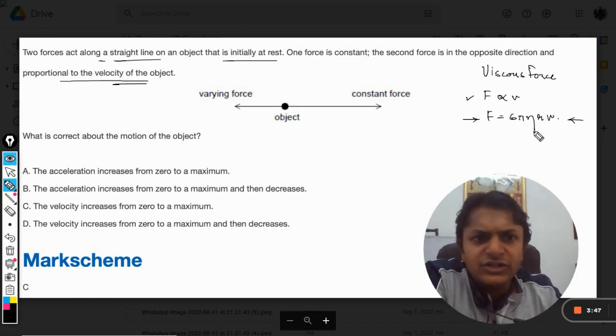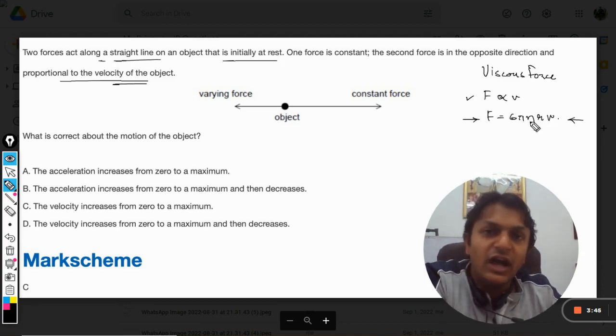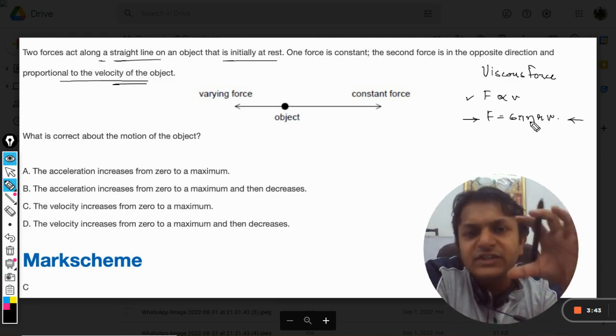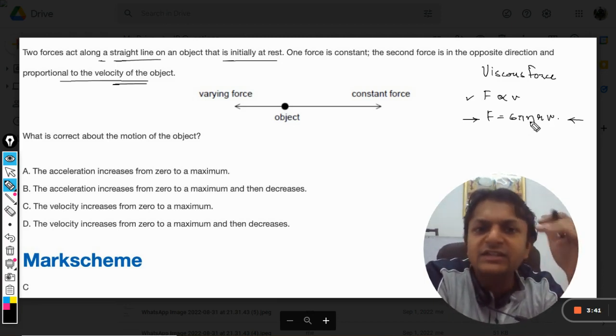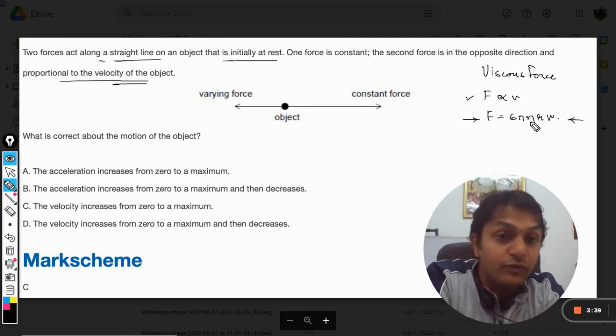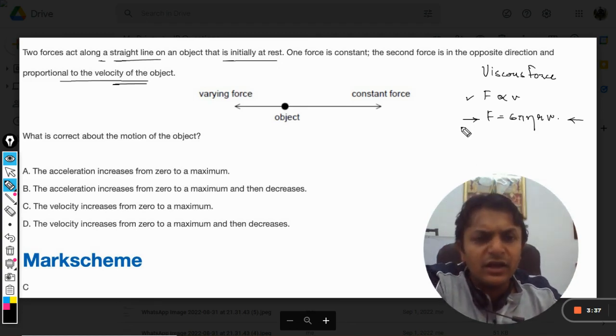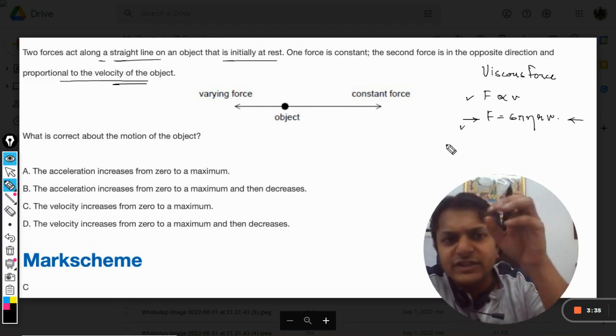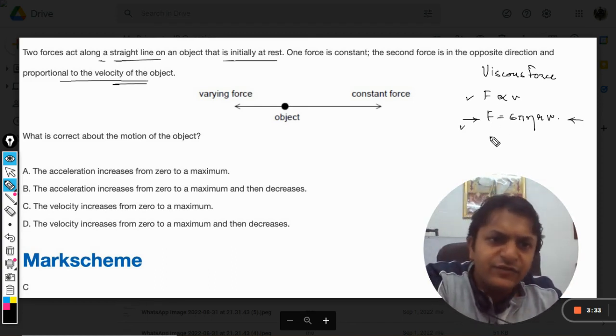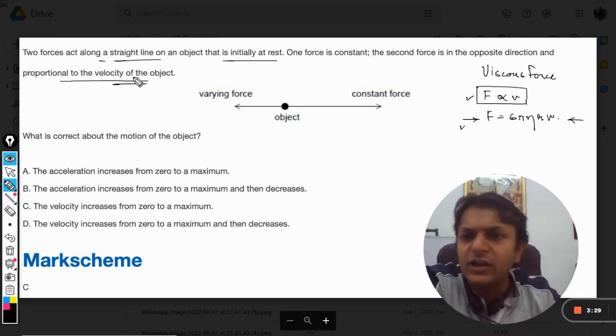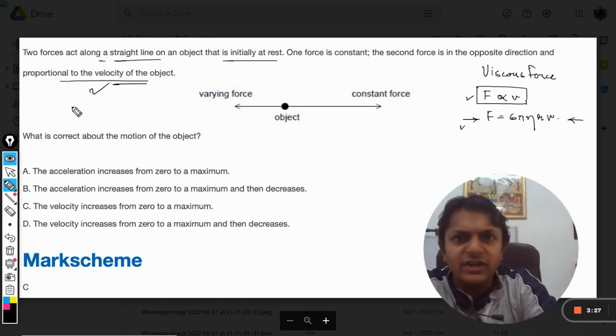6π is a constant, η is coefficient of viscosity, r is the radius of this spherical body, and v is the velocity with which it is moving. So this is the force that is applied. Now this viscous force is found to be directly proportional to the velocity and that is what is given in the question.